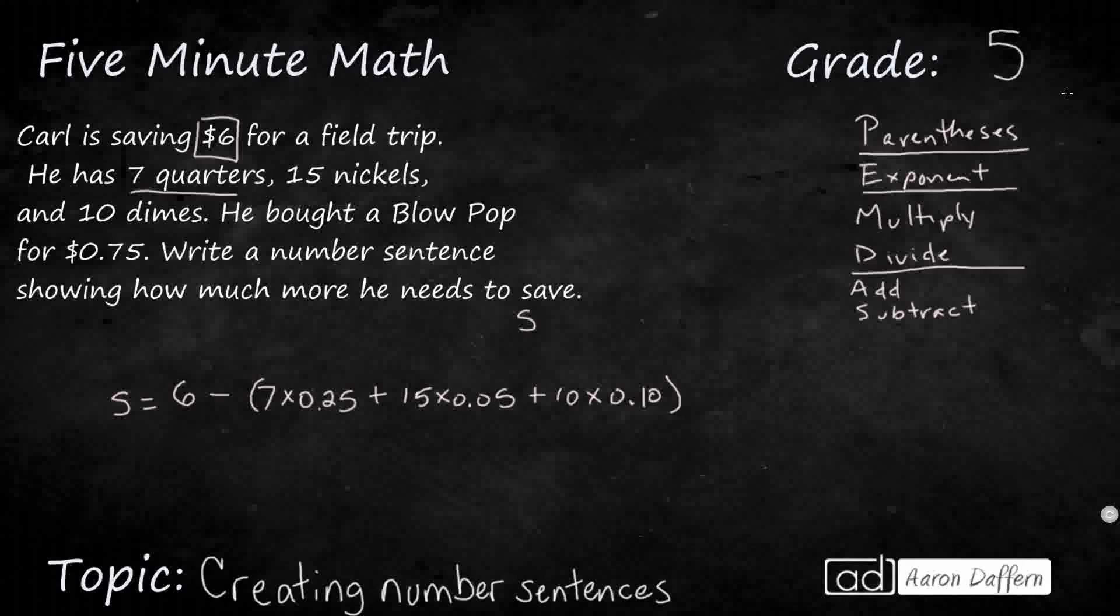Well, if you're saving up money for a field trip, and you end up spending something on a blow pop, that's money that should have gone to the field trip. So to make that money back, you actually are going to have to save more. So we're going to need to add that at the very end. We're going to need to have a 0.75 that we add to the end, because that's going to increase the amount of money that he needs to save, because he probably should have saved his money instead of buying a blow pop.